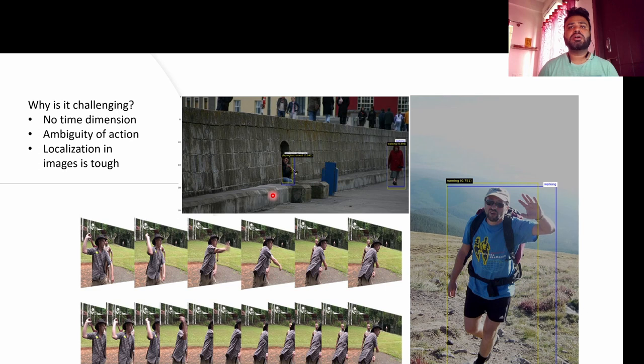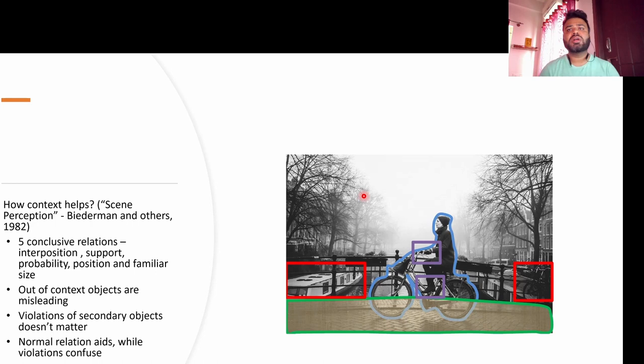Finally, the task of localization itself is pretty challenging compared to videos. In case of videos, it is as simple as taking the difference between subsequent frames to get the region of action. But in case of images, the model has to first localize the primary subjects and then classify them. Based on the latest state-of-the-art work, one approach that has been tried is to consider contextual information available in the image for action recognition.